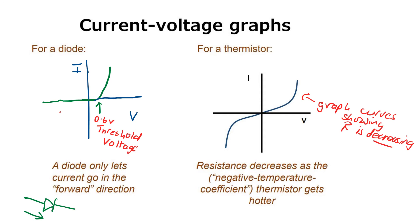For the thermistor shown on the right, we've got a curving graph but it's the other way around to a filament lamp. The graph curves showing that resistance is decreasing. Resistance decreases as the negative temperature coefficient thermistor gets hotter.